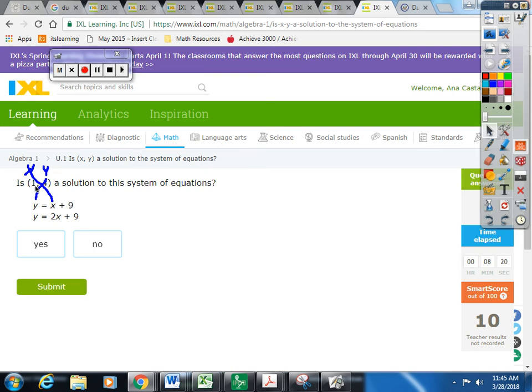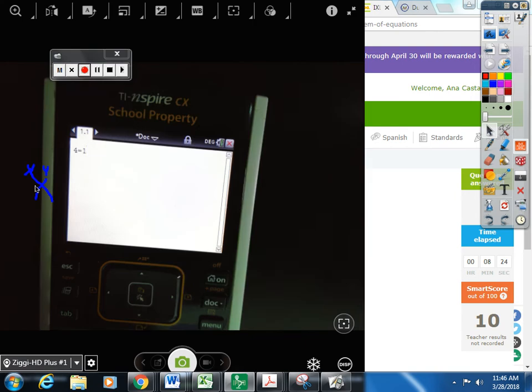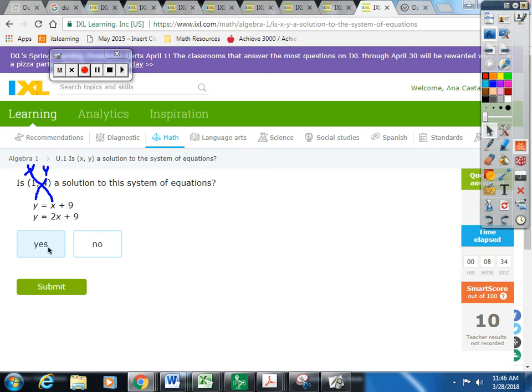So, I start with four equals, because that's what it says. Y equals X. Which one's my X? One. One. So, I put one. And then I put plus nine. Plus nine. And I get false. False. So, does that mean it's a solution? No. No.